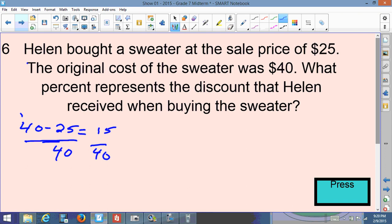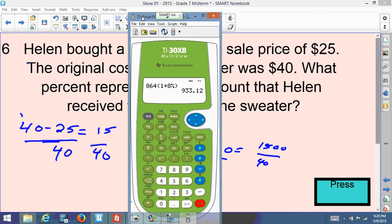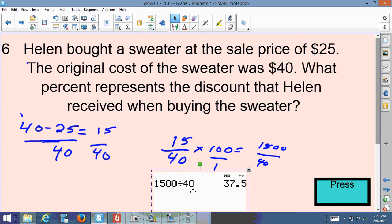And I'm going to put that over the original price of $40. So I'll have 15 over 40, and to get a percent, I'm going to multiply it by 100. So I'll have 1500 over 40. Now let me get my calculator. 1,500 divided by 40 will give me the percent, and that's 37.5%. So that's my answer, 37.5%. That's how much she saved or the discount was for her to buy that sweater.